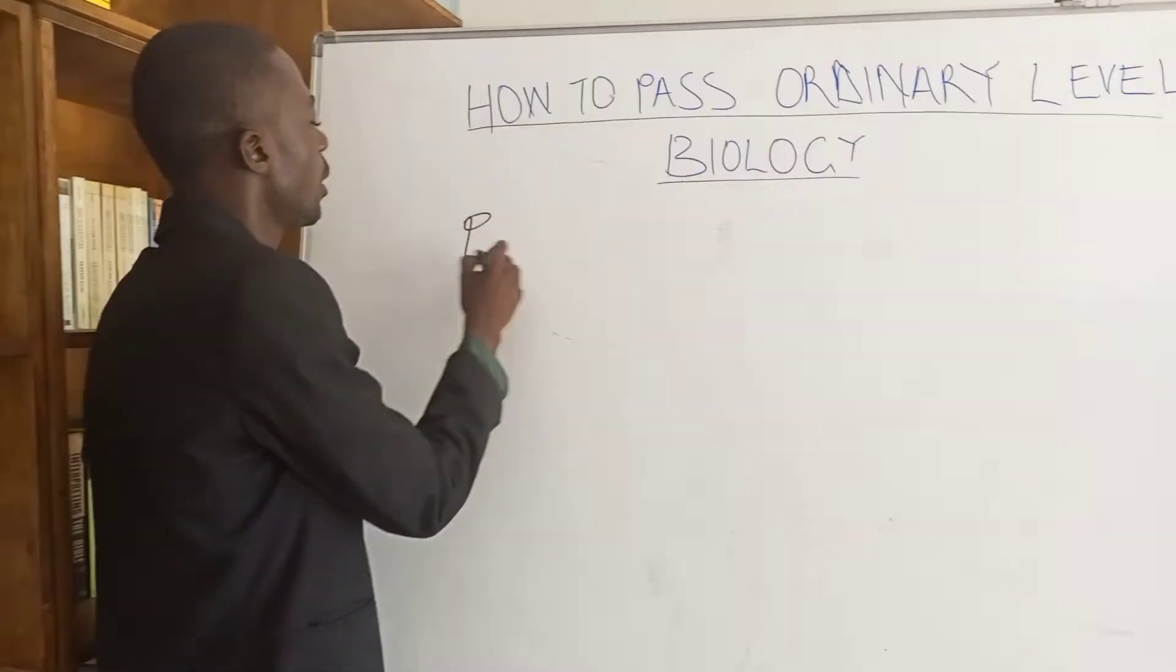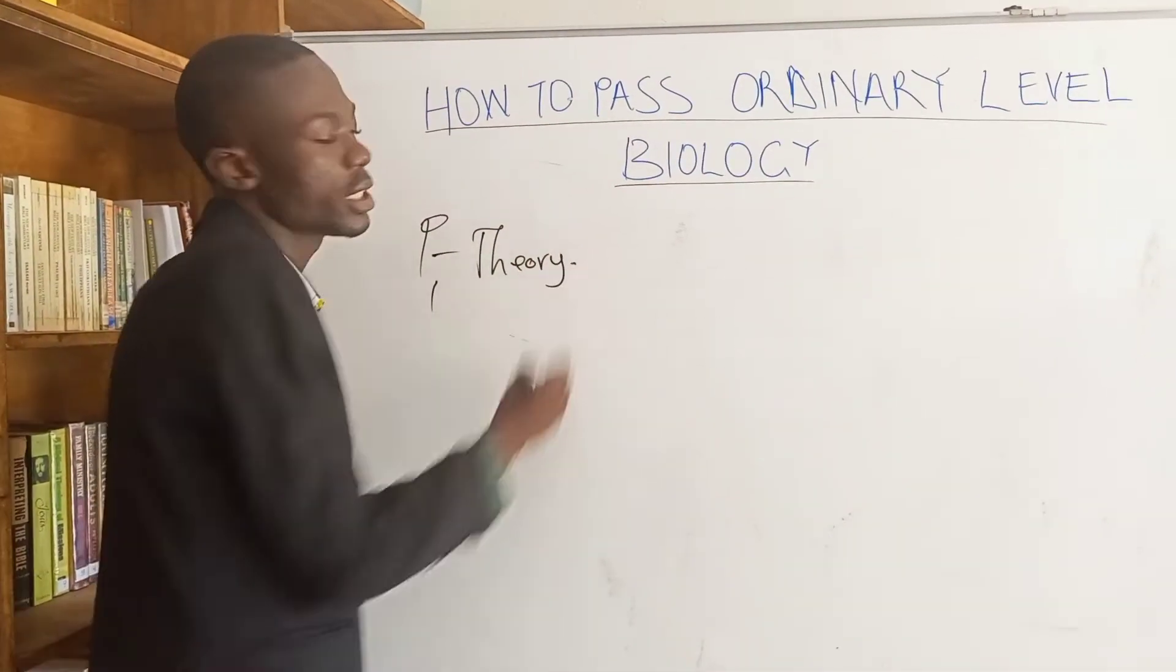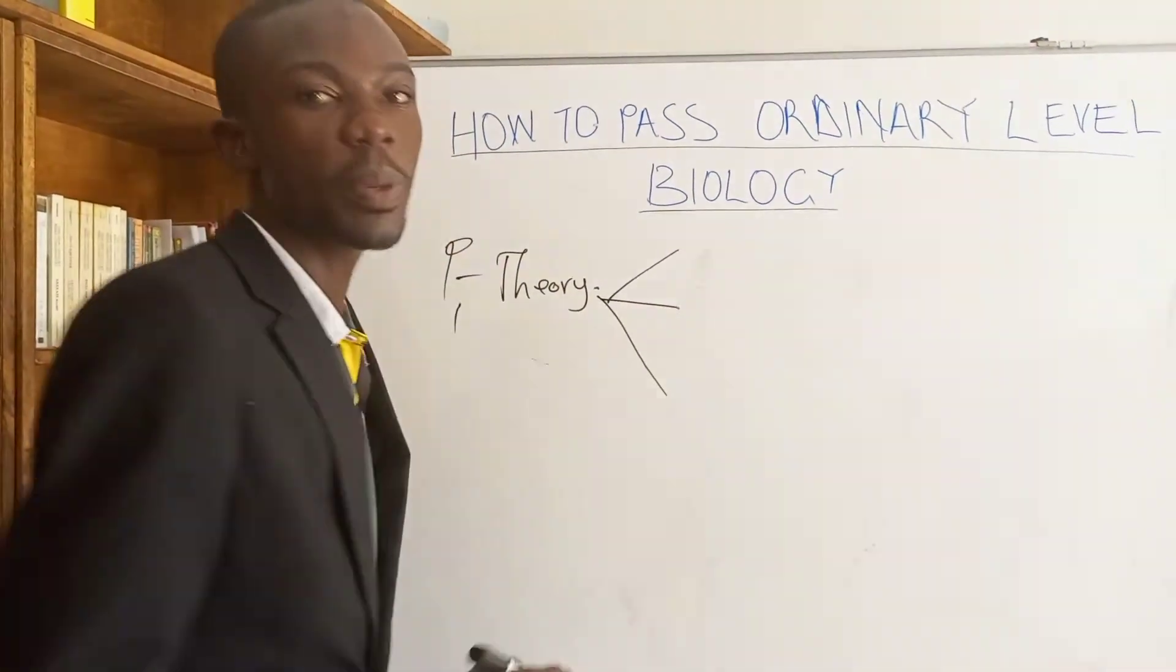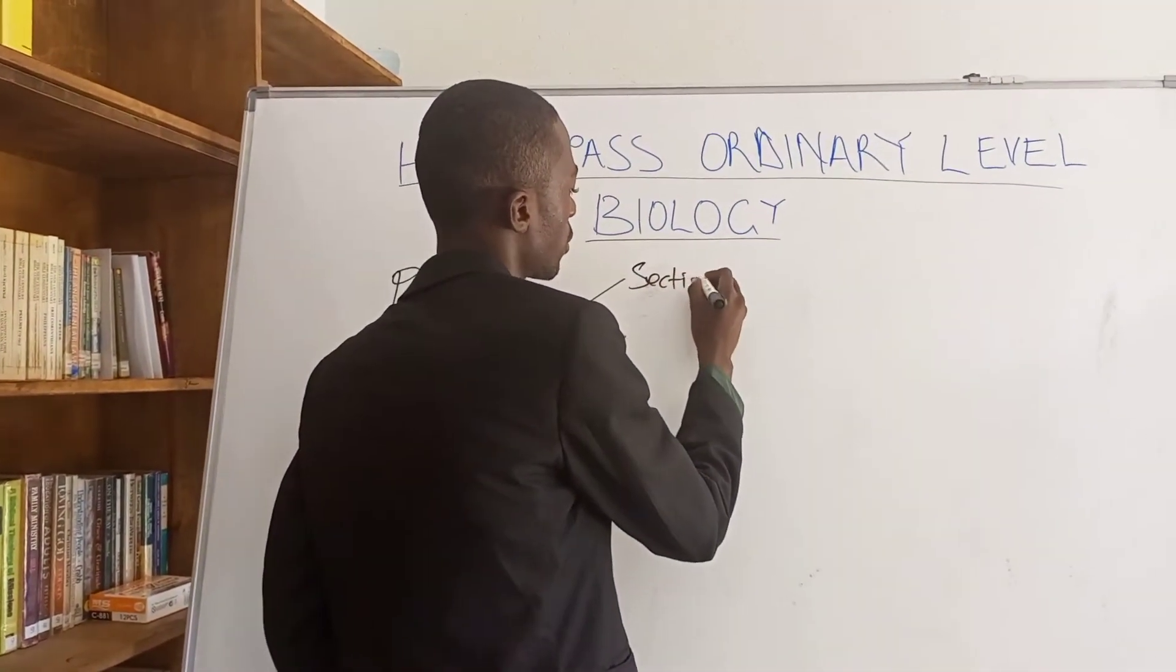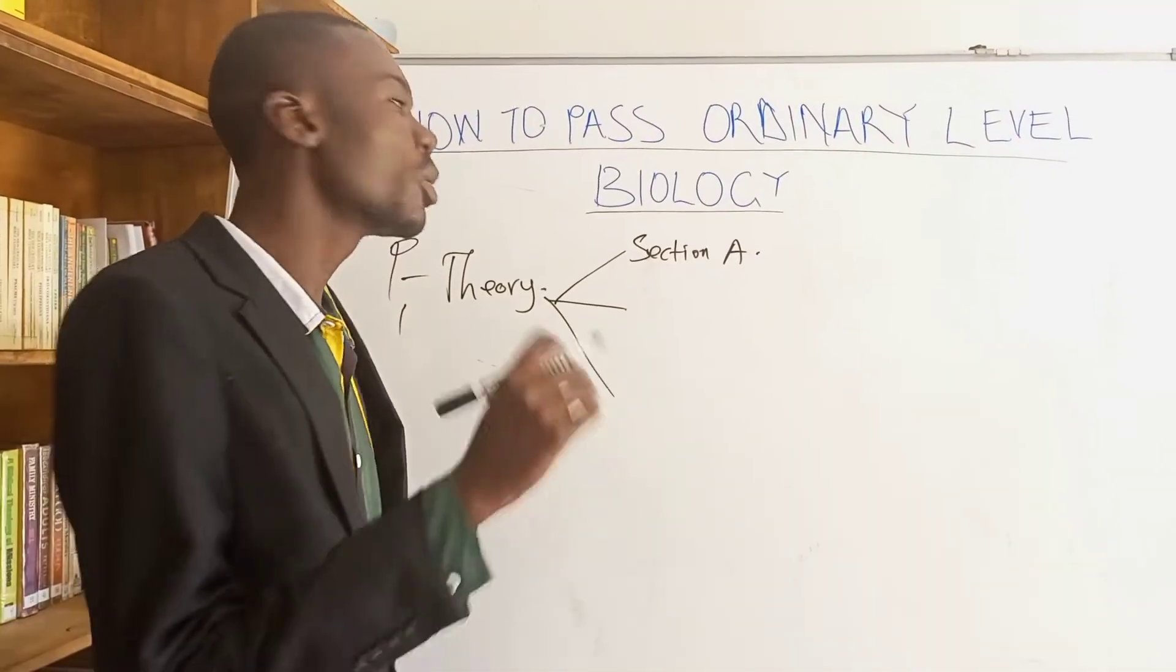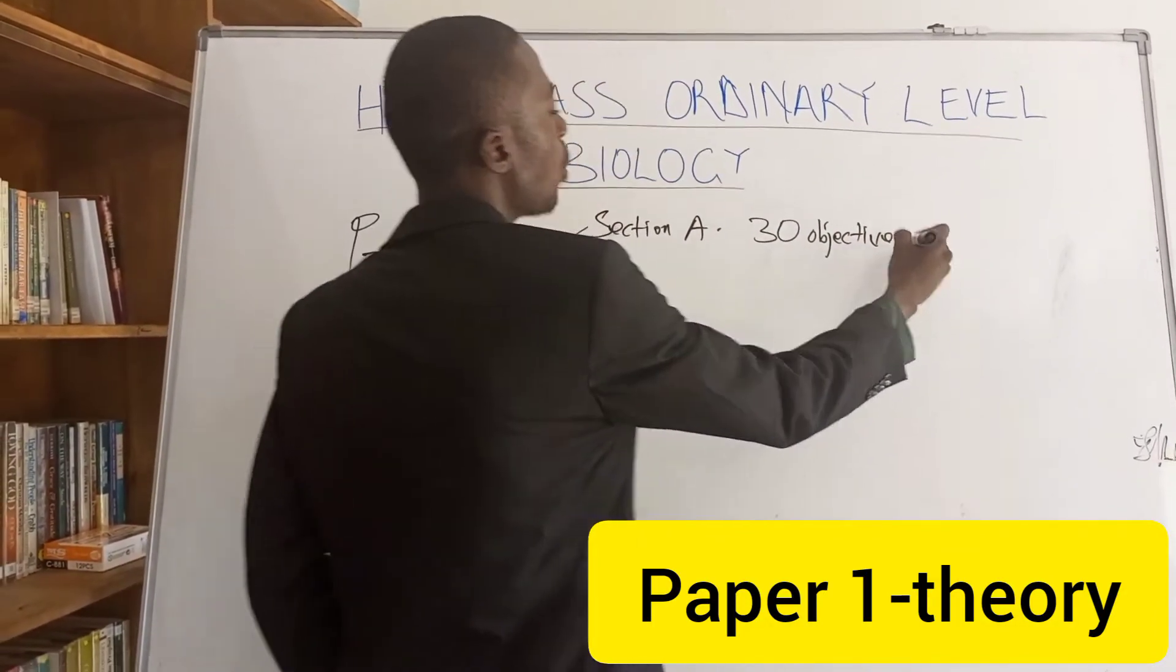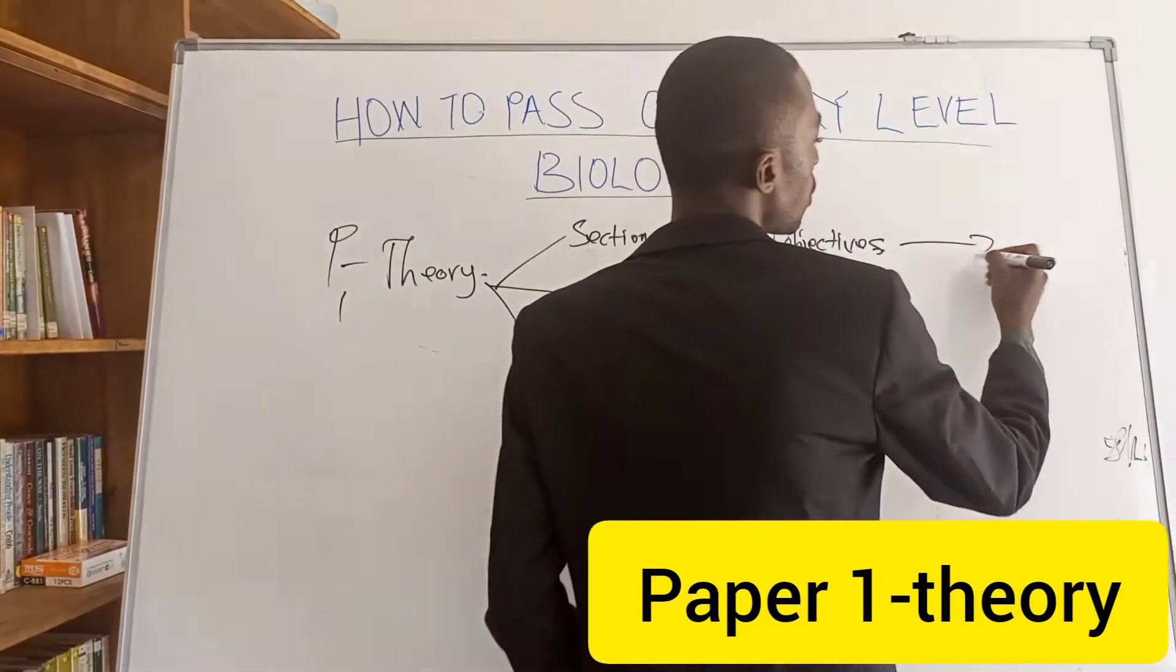Now we have paper 1. Paper 1, as I told you, it is a theory paper. Now this theory paper is divided into three sections. The first section is section A. Now in section A, they will bring for you 30 objectives. These are objective questions, 30 objective questions adding up to give you 30 marks.